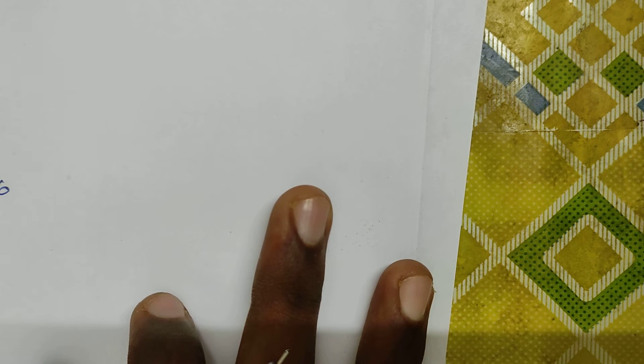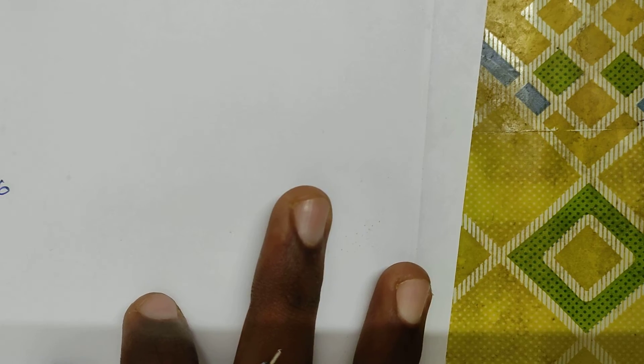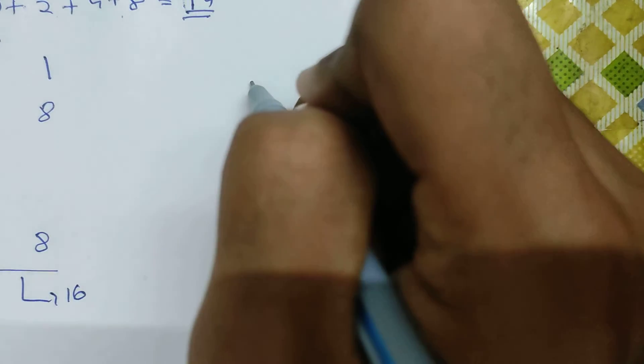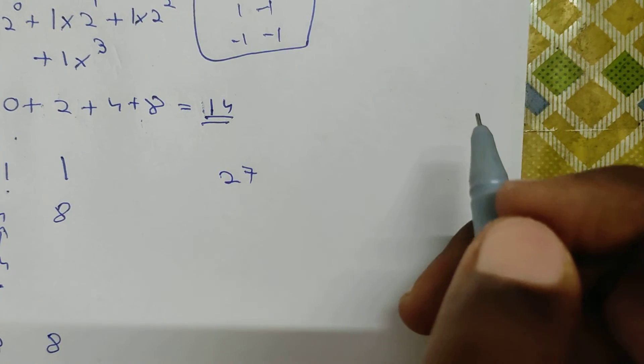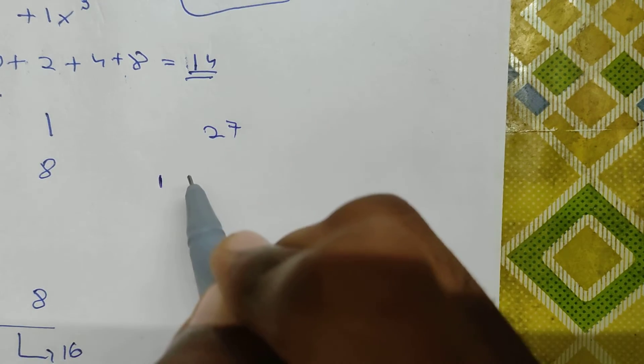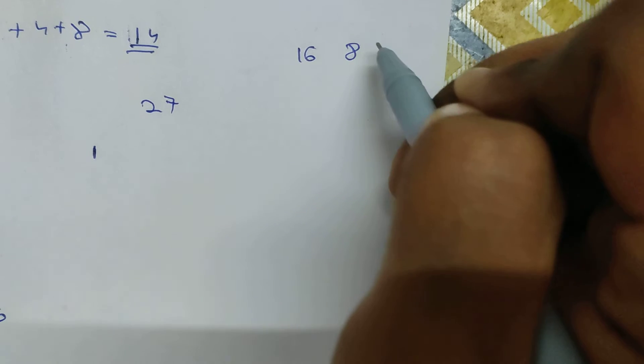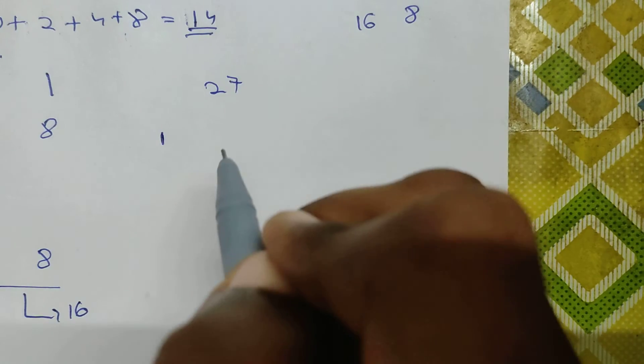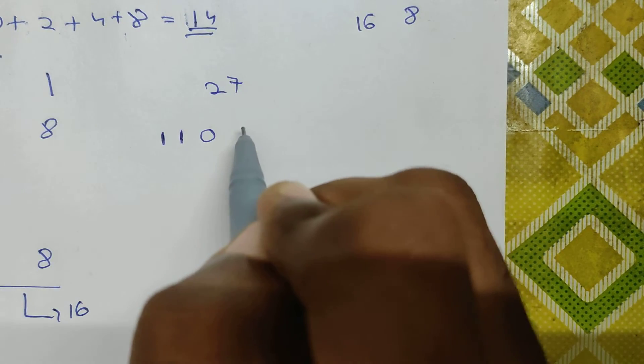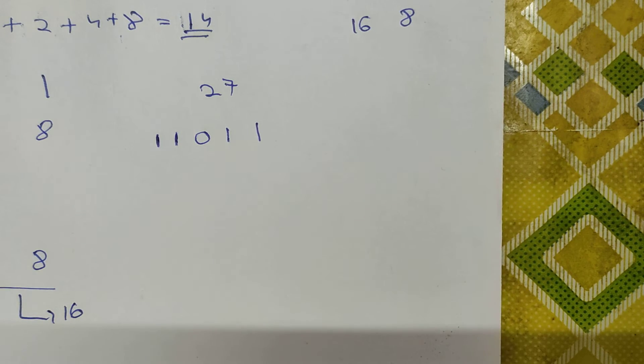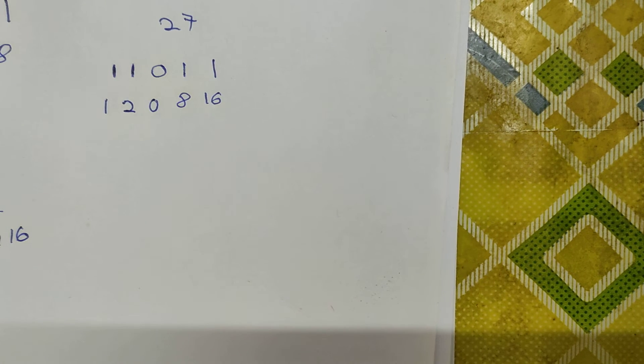Now I will give you another test case: 27. The binary representation of 27 is 1,1,0,1,1 — let me verify: 1 + 2 = 3, + 0 = 3, + 8 = 11, + 16 = 27. Correct. So the binary representation is 1,1,0,1,1 and the corresponding decimal values are 1, 2, 0, 8, 16.